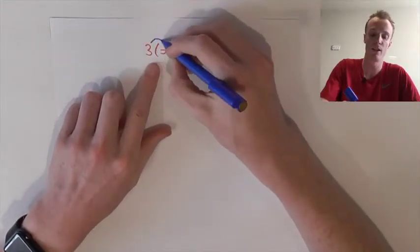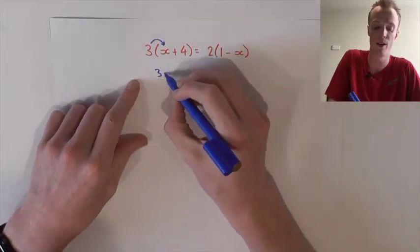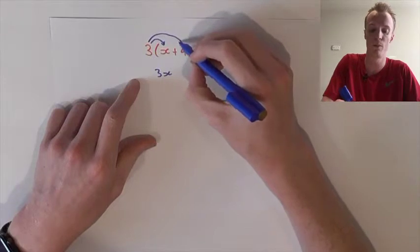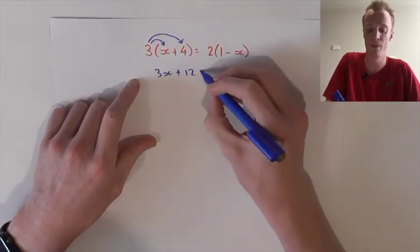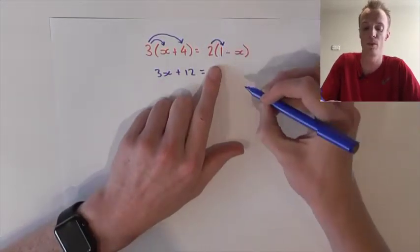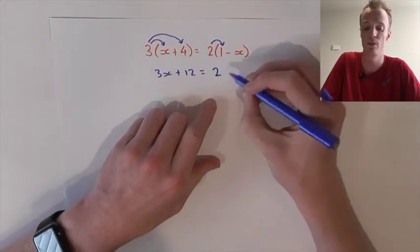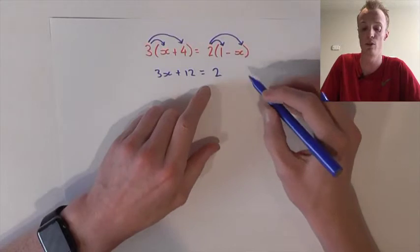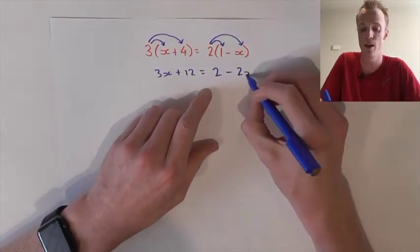So this 3 must first multiply with the x, which will give us 3x, then it must also multiply with the 4, giving us plus 12. On the right-hand side, this 2 must also multiply with this 1, which gives us 2 times 1, which is 2, and it also has to multiply with this negative x. 2 times negative x is take 2x.